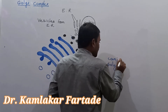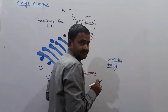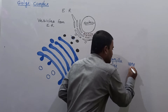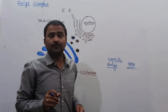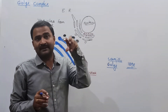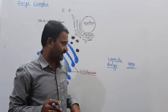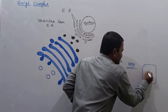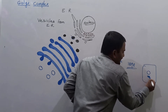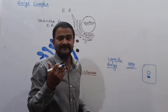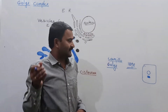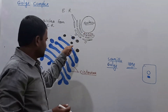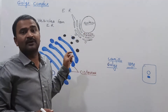In the cell, near the nucleus in the cytoplasm, there are some densely stained structures. Camilo Golgi observed these densely stained structures and used them to identify the structure of the Golgi apparatus.